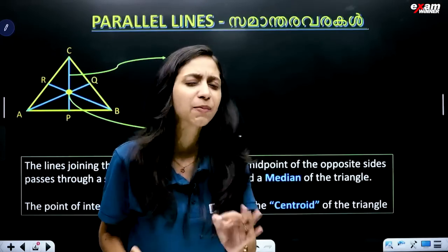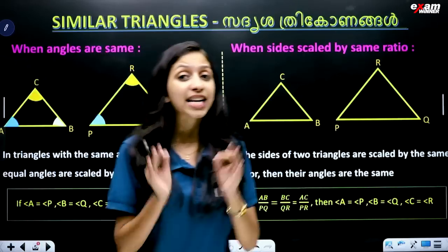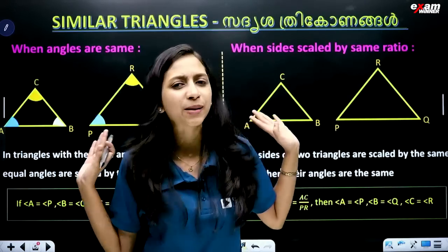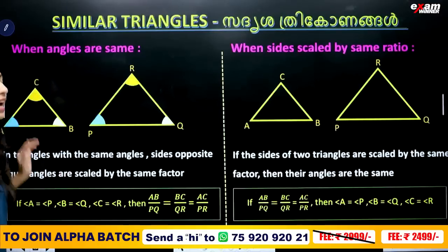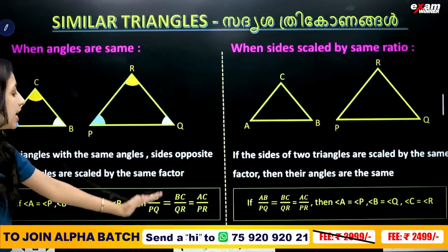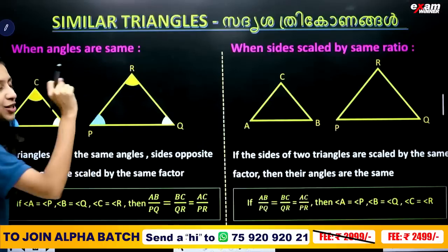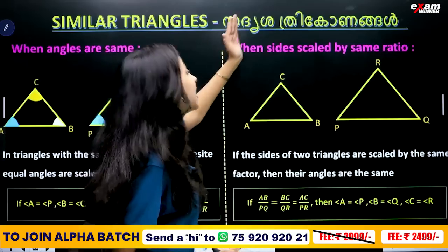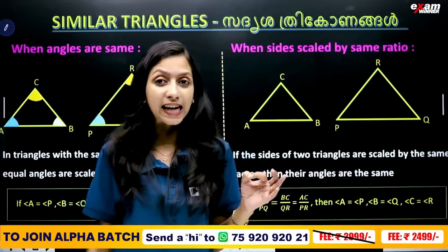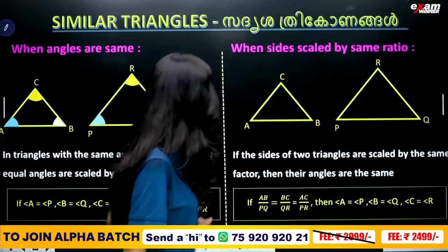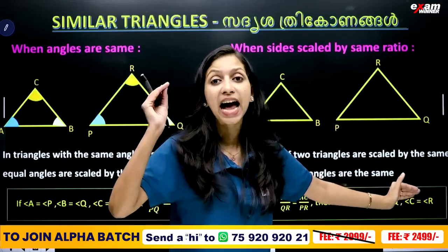In the parallel lines chapter, these three key points are the main items. Then, similar triangles: similar triangles have the same shape. There are three similarity conditions. First, angles are the same (AAA). Second, the sides are in the same ratio: AB/PQ = BC/QR = AC/PR (SSS). Third, two sides in the same ratio with the included angle equal (SAS). The sides are similar in the same ratio, and opposite angles are equal.